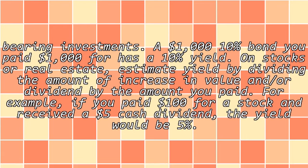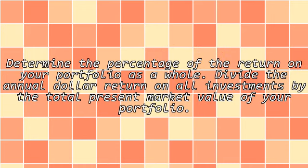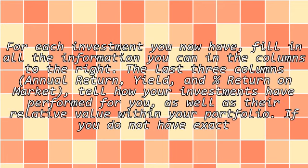For example, if you paid $100 for a stock and received a cash dividend, the yield would be 5%. Determine the percentage of the return on your portfolio as a whole by dividing the annual dollar return on all investments by the total present market value of your portfolio. For each investment you now have, fill in all the information you can in the columns to the right. The last three columns — annual return, yield, and percent return on market — tell how your investments have performed.